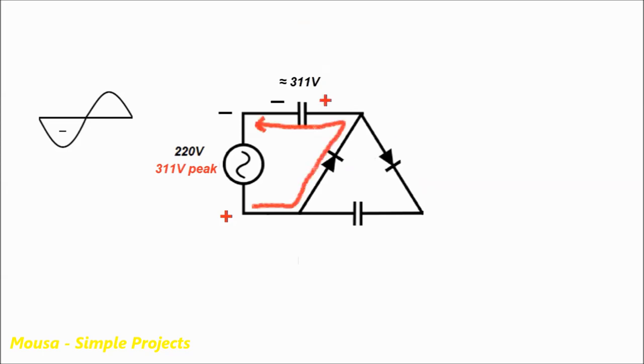However, there is some voltage drop across the diode, but it is negligible. In the next positive cycle of the input AC voltage, this side will be positive and this side will be negative.